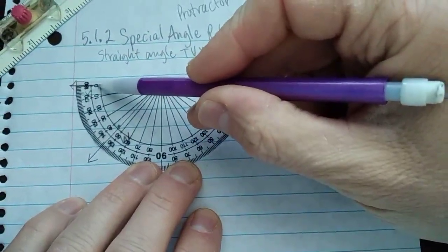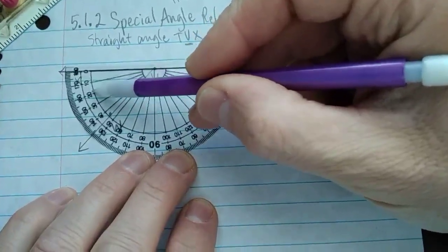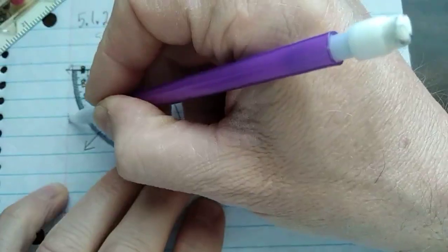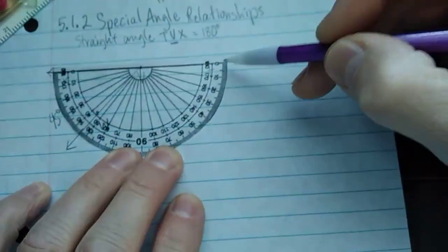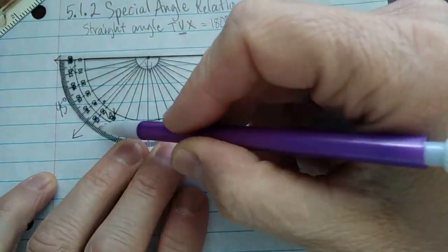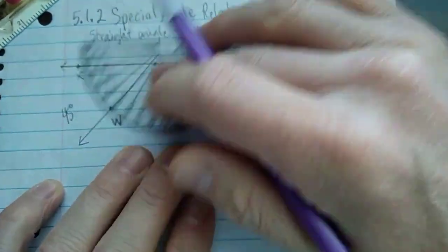So starting on the bottom, because that's where the zero is, 0, 10, 20, 30, 40, maybe 46. And on the other side, I use the top or the outside numbers, 0, 10, 20, 30, clear up through 130, 135.